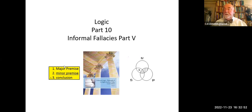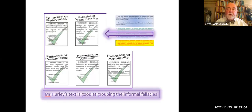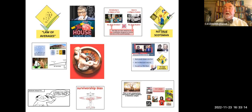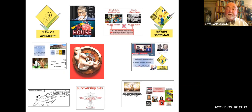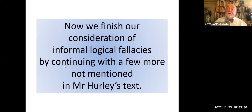Hello and welcome to part 10 of our 13-part series of Logic, Philosophy 8, Detective Logic. We're at the fifth part of the five parts of Informal Fallacies. Already we've considered fallacies of relevance, fallacies of weak induction, presumption, radical analogy, and ambiguity. In the last lecture we looked at the law of averages, the house always wins, including things like baby roulette and Russian roulette, climbing amount improbable, and survivorship bias. Then we went on to consider the no-true Scotsman fallacy in its variety of applications. And now we're going to finish our consideration of Informal Logical Fallacies with a few more.